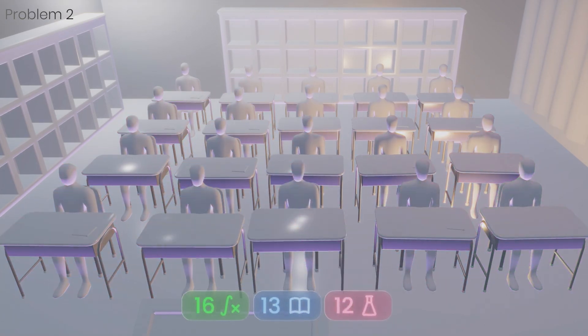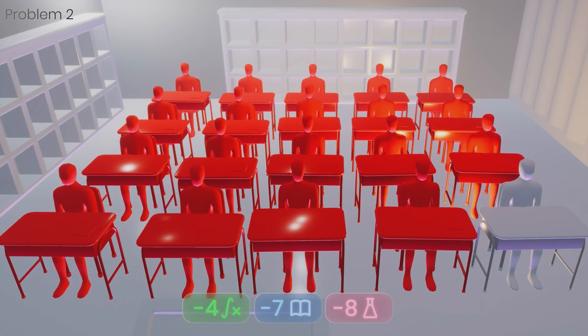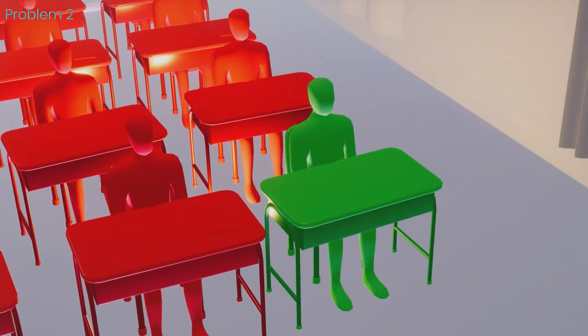So to find the maximum number of students who failed any subject, we just add the number of fails for each subject, which gives us 19. This means there must be at least one student who passed everything out of the 20.